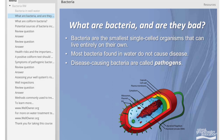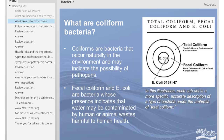Bacteria are the smallest single-celled organisms that can live entirely on their own. Most bacteria found in water do not cause disease. Those that do are called pathogens. Coliforms are bacteria that occur naturally in the environment and may indicate the possibility of pathogens. Fecal coliform and E. coli are bacteria whose presence indicates that water may be contaminated by human or animal waste harmful to human health.